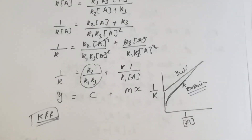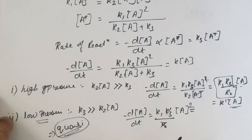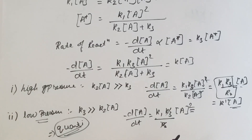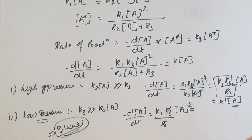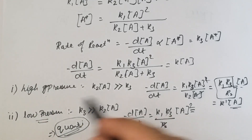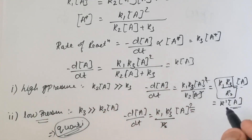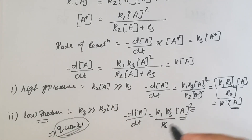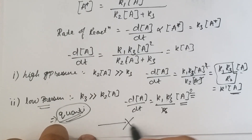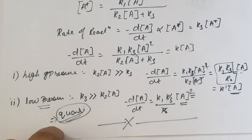To summarize: for unimolecular reactions, when the pressure is high, the reaction is first order; when the pressure is low, the reaction is second order. The derivation and explanation of Lindemann theory is now complete. Thank you very much.